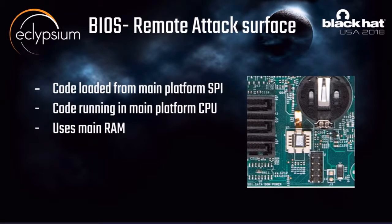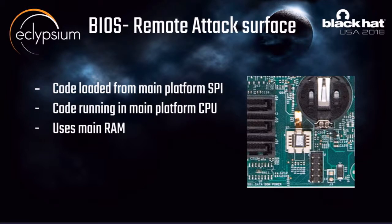BIOS is essentially the early code that configures hardware before loading and transitioning execution to the operating system. That means setting registers, configuring memory protections, setting SMM, and locking down configurations with write-once bits that require a power cycle to change. It also sets protections on its own flash. It runs on the main CPU using the main flash and RAM. BIOS is the root of trust that everything afterwards relies on — if you compromise BIOS, you win.